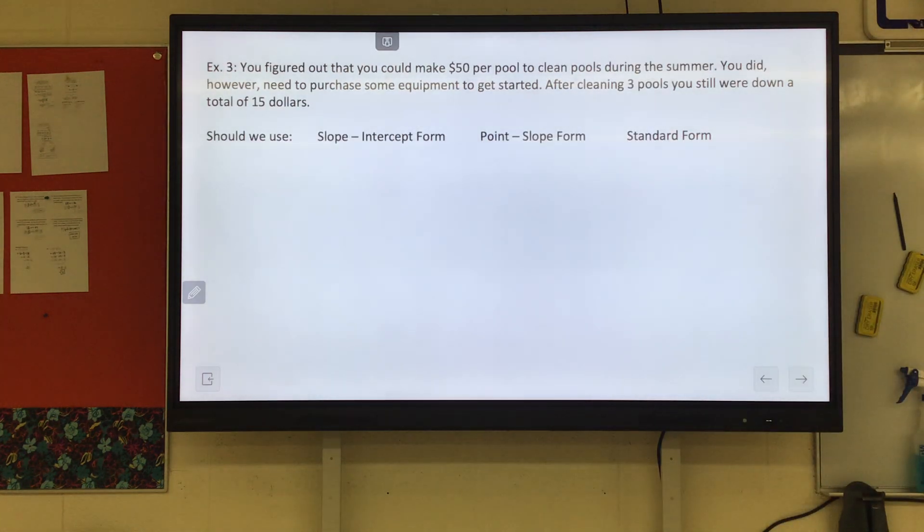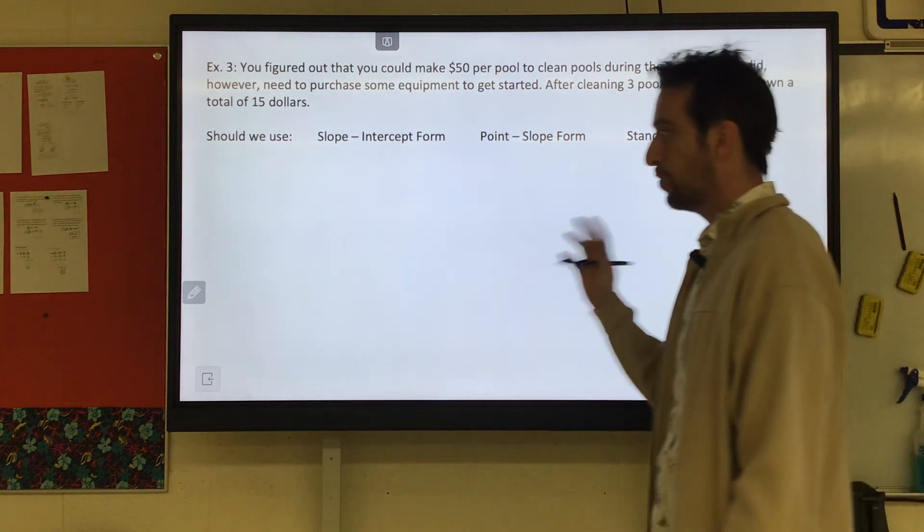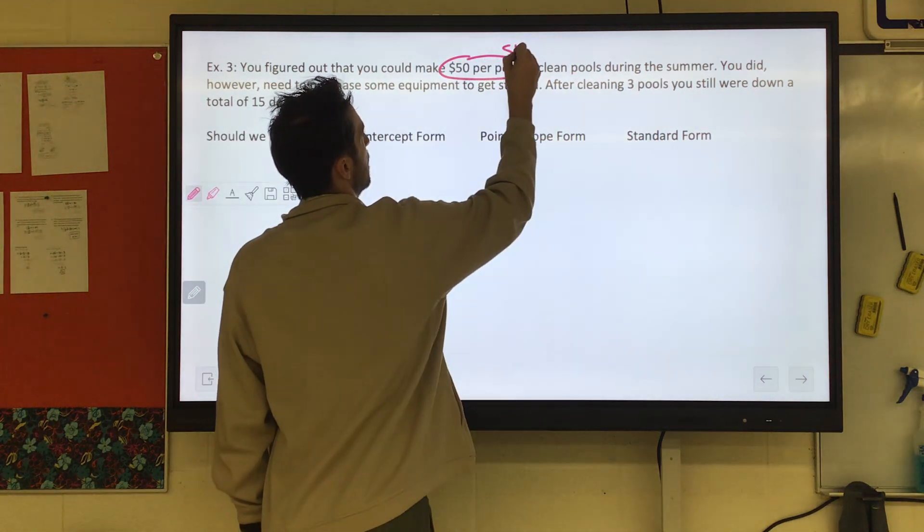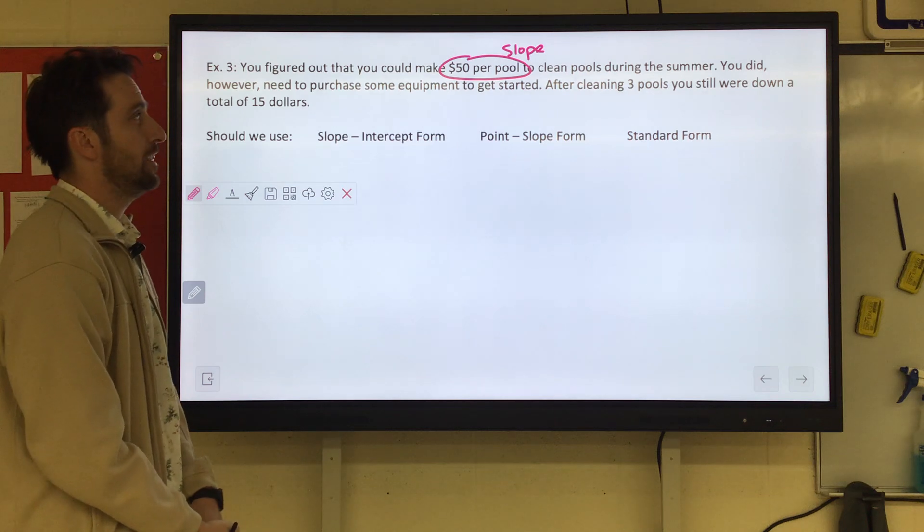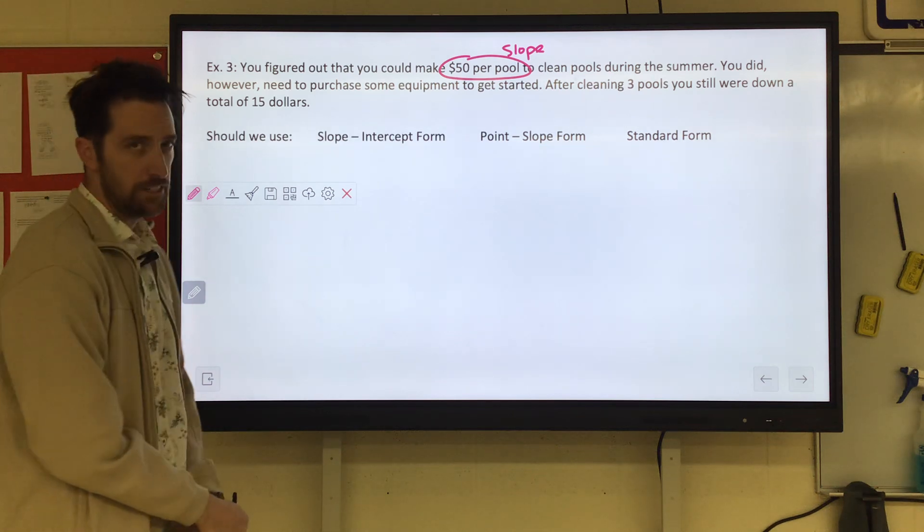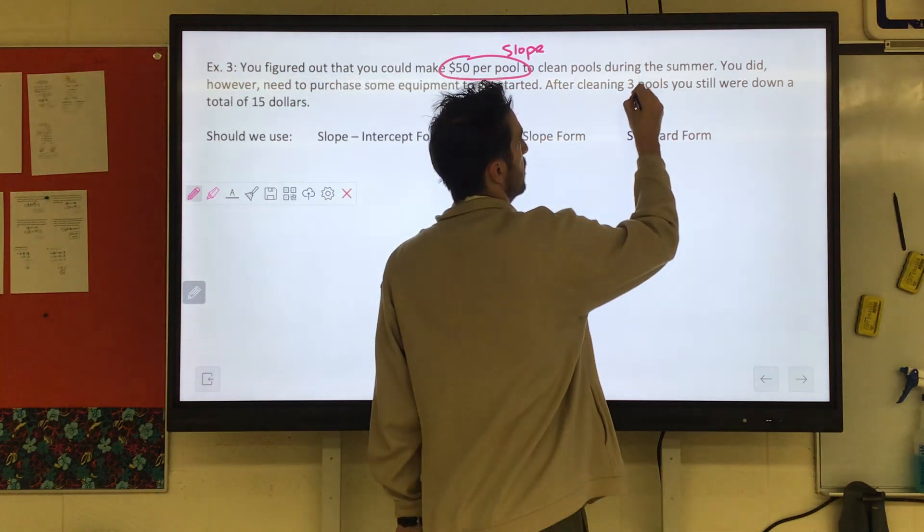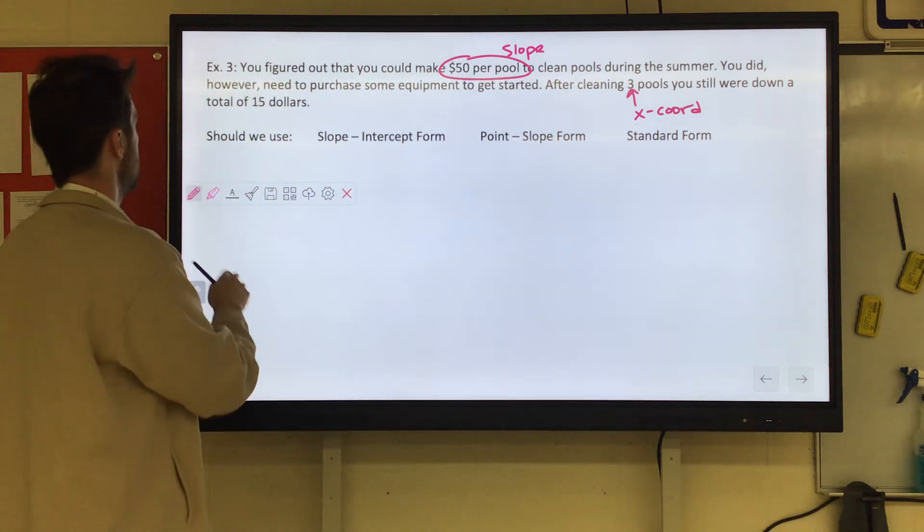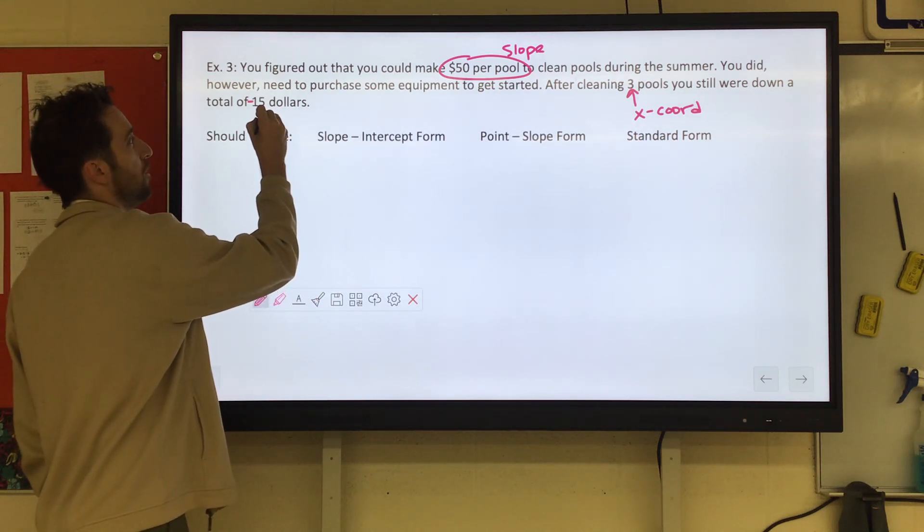All right. You figured out that you can make $50 per pool to clean pools during the summer. $50 per pool. That sounds like a slope to me. We have a slope. You did, however, need to purchase some equipment to get started. After cleaning three pools, you were down a total of $15. So that certainly sounds like a coordinate. Let's call the pools x. So 3 would be our x-coordinate. We were down a total of $15. Now, down money means negative. So it's like negative 15 would then be our y-coordinate.